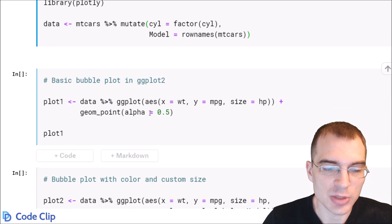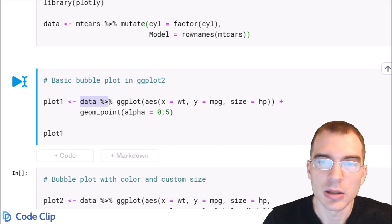To make the bubble plot in ggplot2 we're just going to take the data, pipe it to ggplot. We're going to set up the x and y aesthetics as we would for a normal scatter plot, so we're going to put weight on the x-axis, miles per gallon on the y.